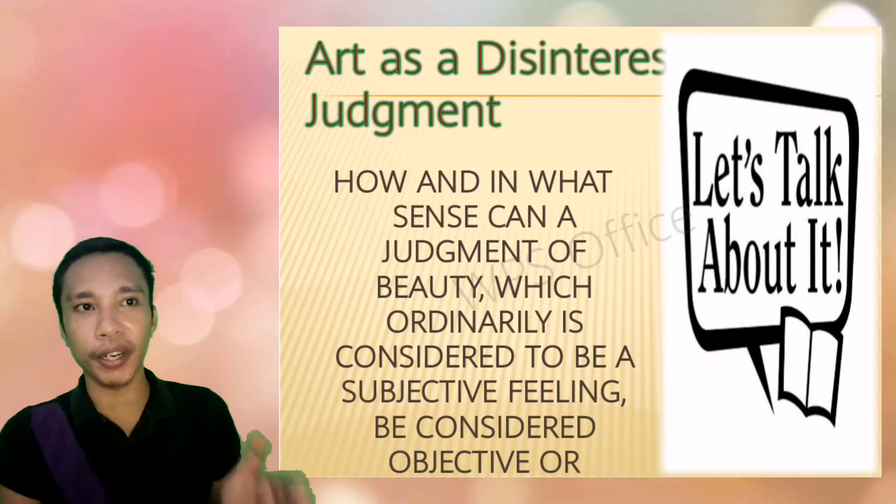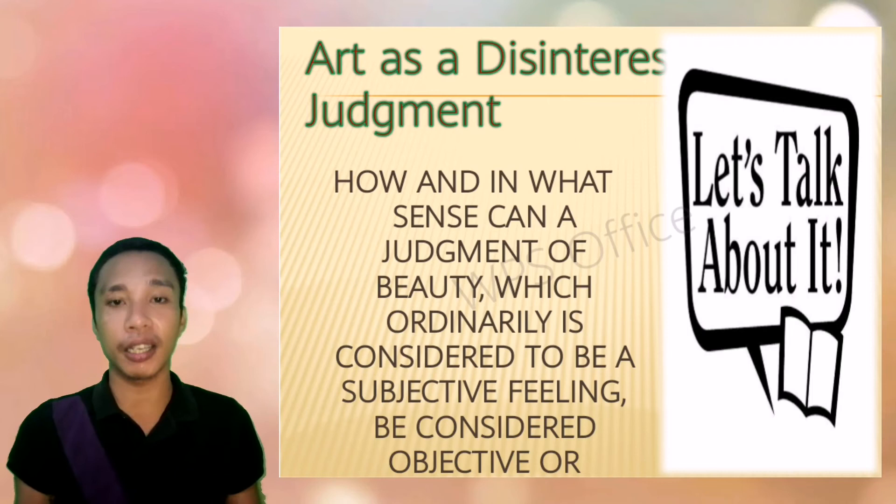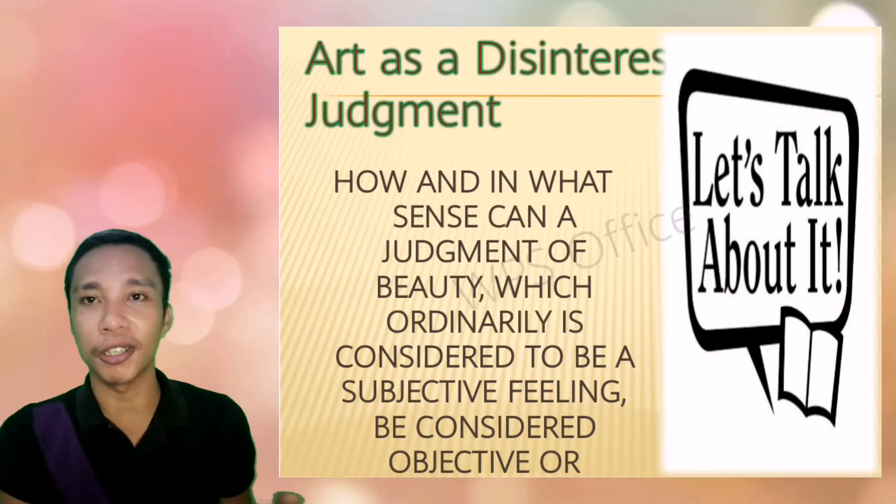According to Immanuel Kant, the challenge is: how and in what sense can a judgment of beauty — which is ordinarily considered a subjective feeling — be considered objective or universal? That's the challenge of art as a disinterested judgment. Some people would find abstract art very beautiful, but for others, it's very confusing and difficult to understand what the artist is trying to present. So the key question for art as a disinterested judgment is how subjective feelings can be considered objective or universal.